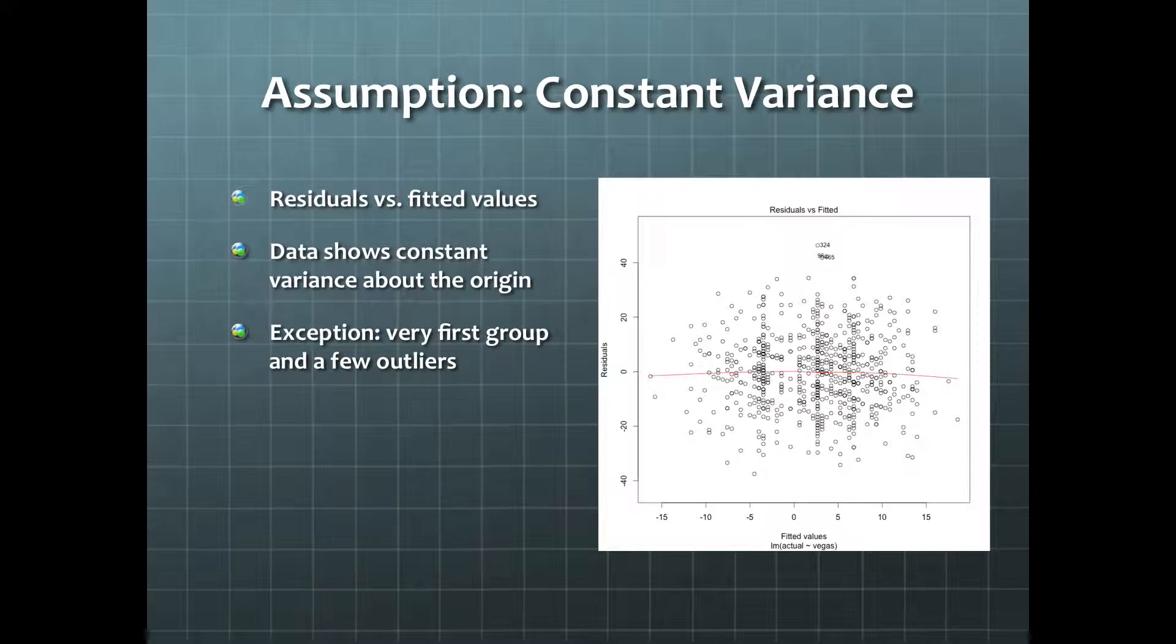The last assumption is that the errors have constant variance. In this plot of residuals versus fitted values, the data shows constant variance about the origin, with the exception of the very first group and a few outliers. All in all, it seems that our assumptions are satisfied.